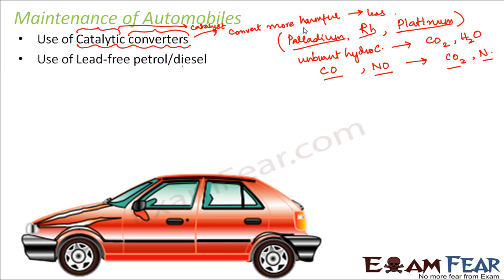Another measure is the use of lead-free petrol or diesel. Petrol or diesel is used for running automobiles — whether it is a car, a bike, or a truck — and in many cases they contain lead. Lead inactivates the catalyst in the catalytic converter, so even if a catalytic converter is present it will not be able to do its job. Therefore, use of lead-free petrol or lead-free diesel is a necessity.